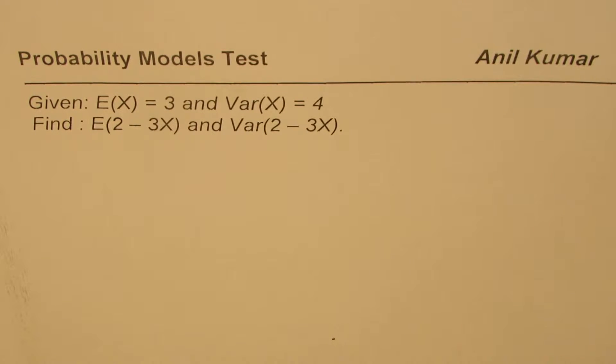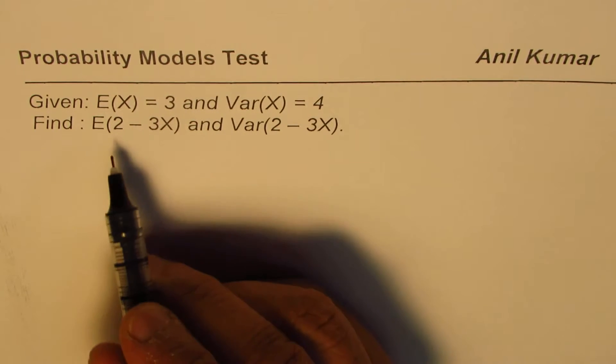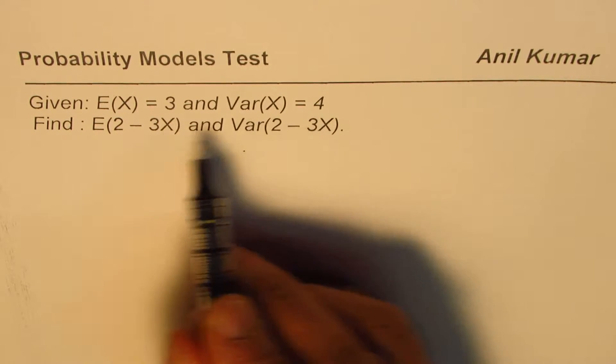I'm Anil Kumar and here is a challenge question on probability model test. You are given expectation equals to 3 and variance equals to 4. Find E of 2 minus 3x and variance for 2 minus 3x.